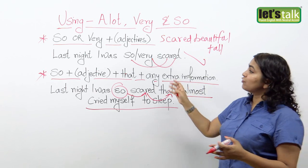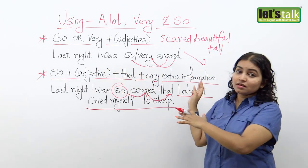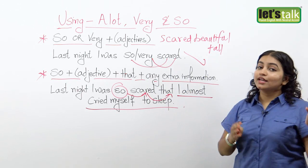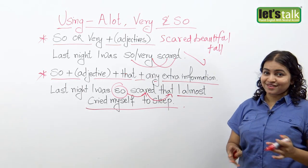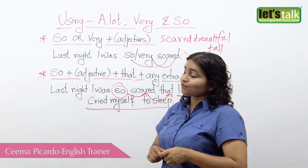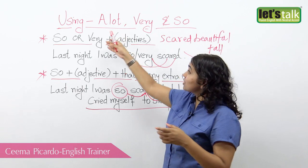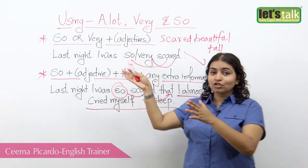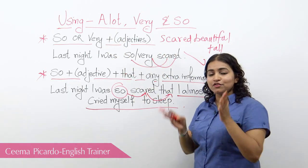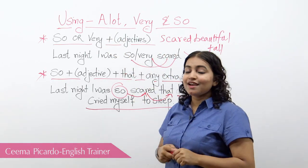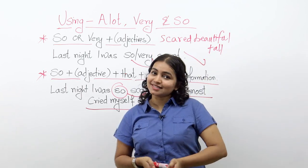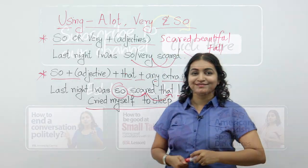But if you are not going to give more information, you can use 'so' or 'very' in front of an adjective. That brings me to the end of this lesson on using the words 'a lot,' 'so,' and 'very.' I hope you found it very interesting and very informative. I'll be back with some more lessons. Until then, goodbye!